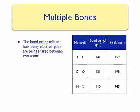Lewis simply represented the number of electron pairs shared between two atoms as the bond order. If a single bond exists between two atoms, such as between two fluorine atoms, we assign a bond order of one. If two atoms have a double bond, a bond order of two is assigned, and if two atoms have a triple bond, a bond order of three is assigned.